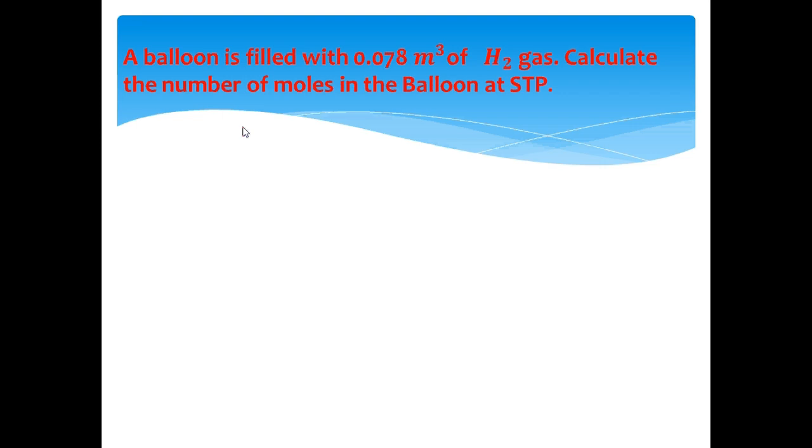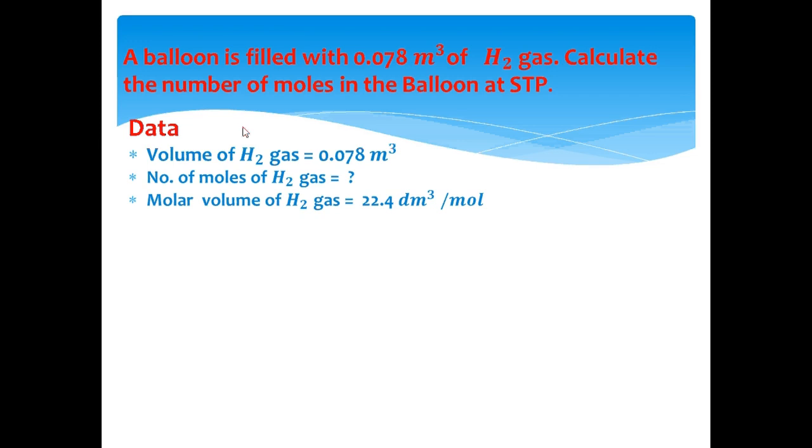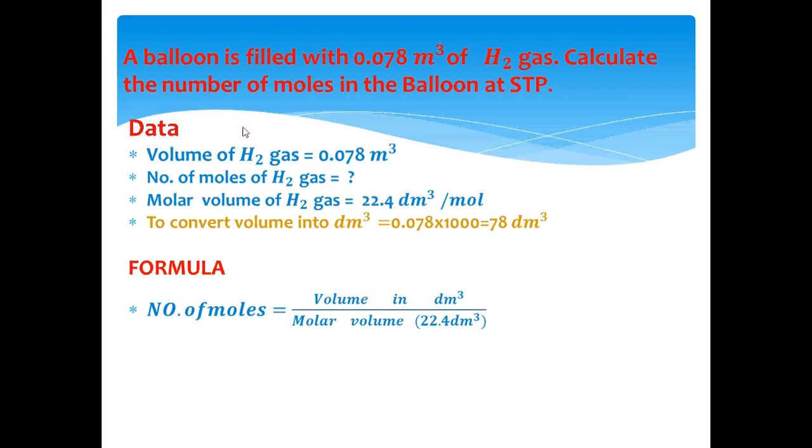The second example is: a balloon is filled with 0.078 meter cube of hydrogen gas. Calculate the number of moles at STP. The data of this problem is given. Since the volume is given in meter cube, first we have to change it into decimeter cube. The following formula will be used to solve this problem. After putting the value into this formula and solving the problem, we will get the answer 3.48 moles.